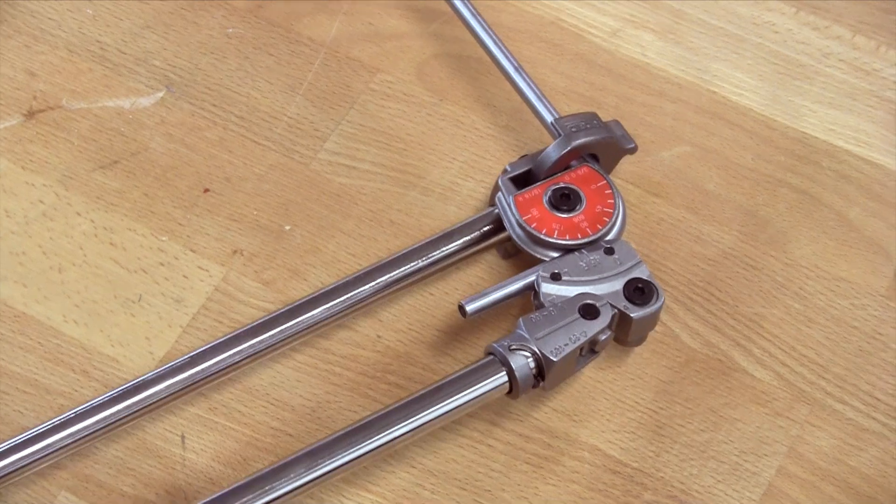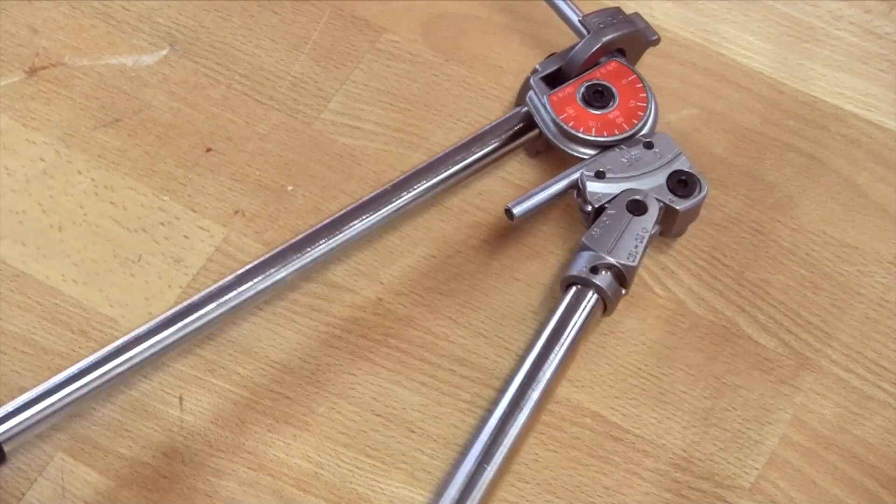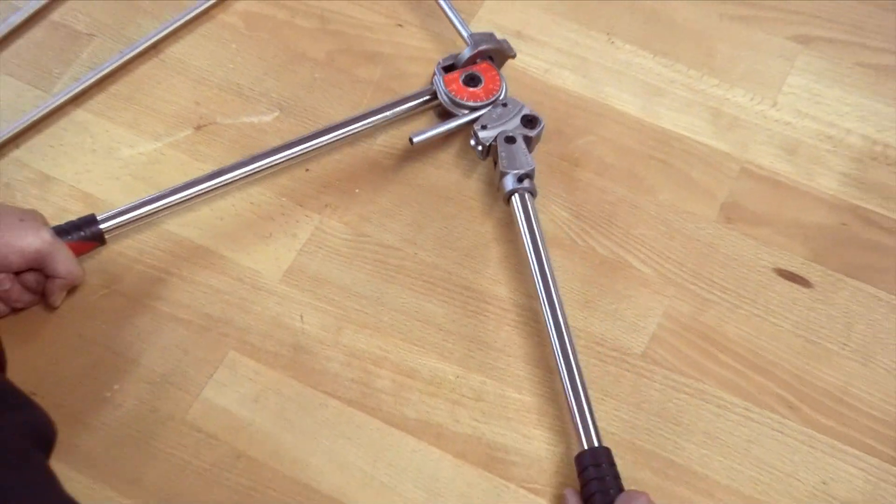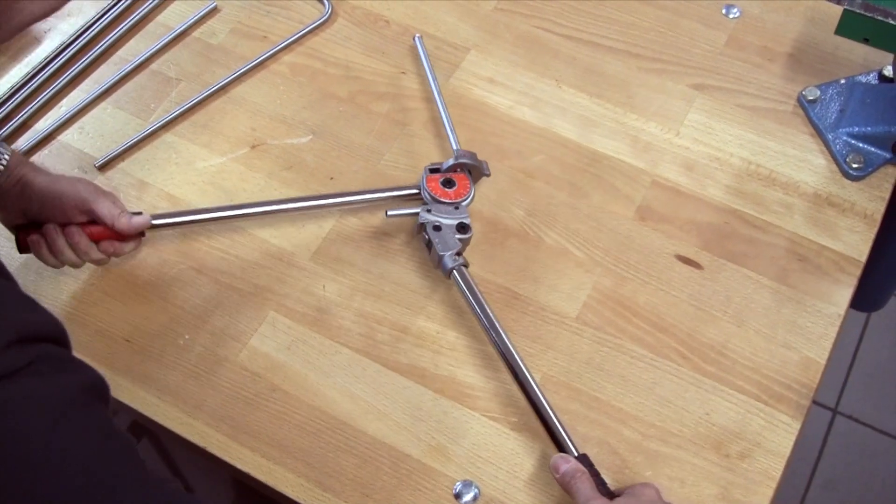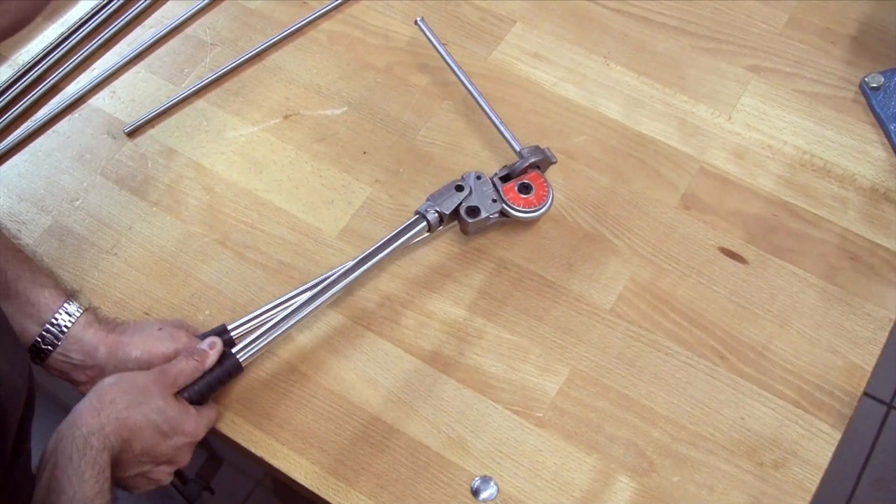Now if you want to do a return bend or a U-bend, clever trick here: we twist the handle and that handle will reset over there, and you can go again and bend around for your 180.